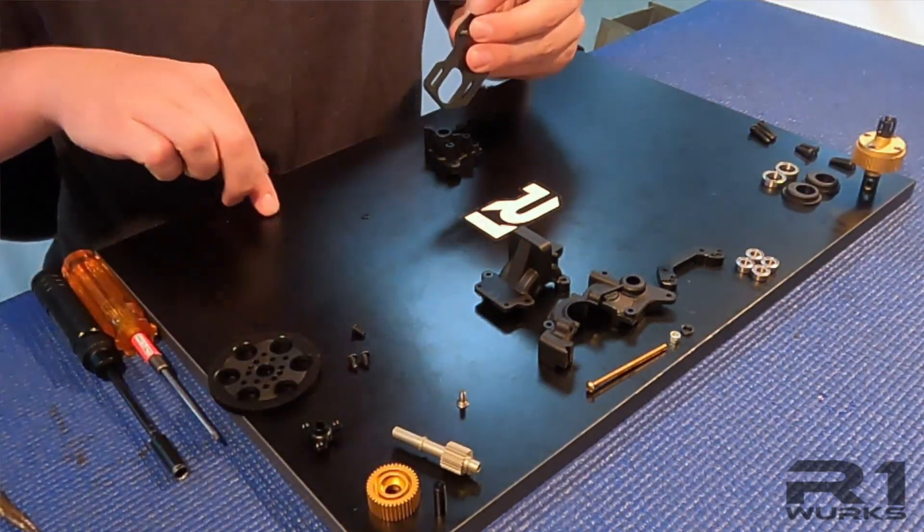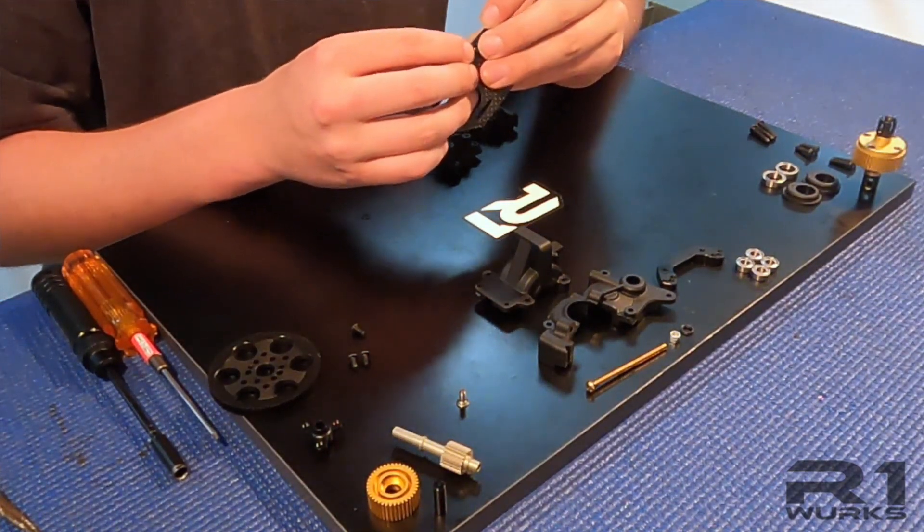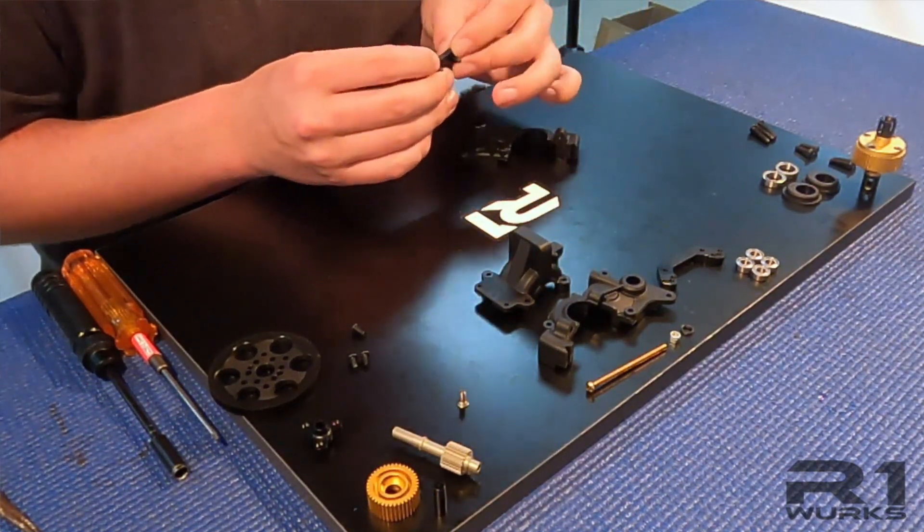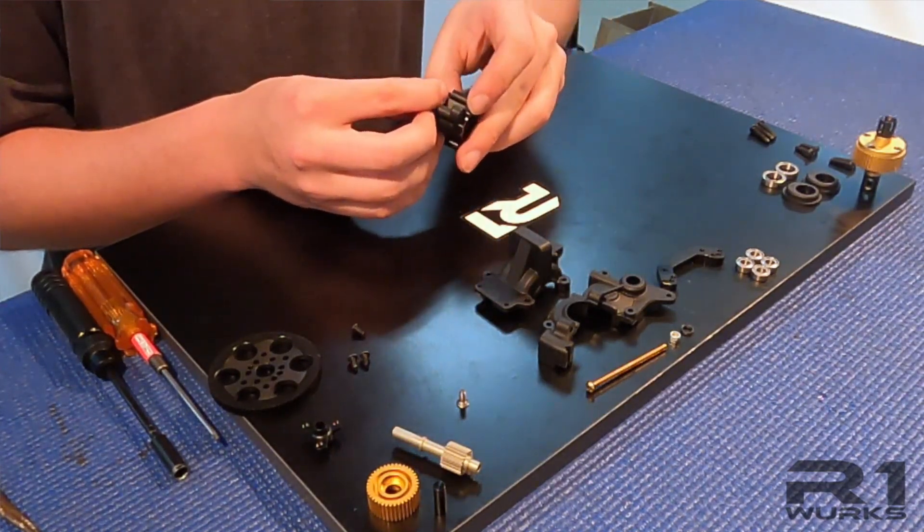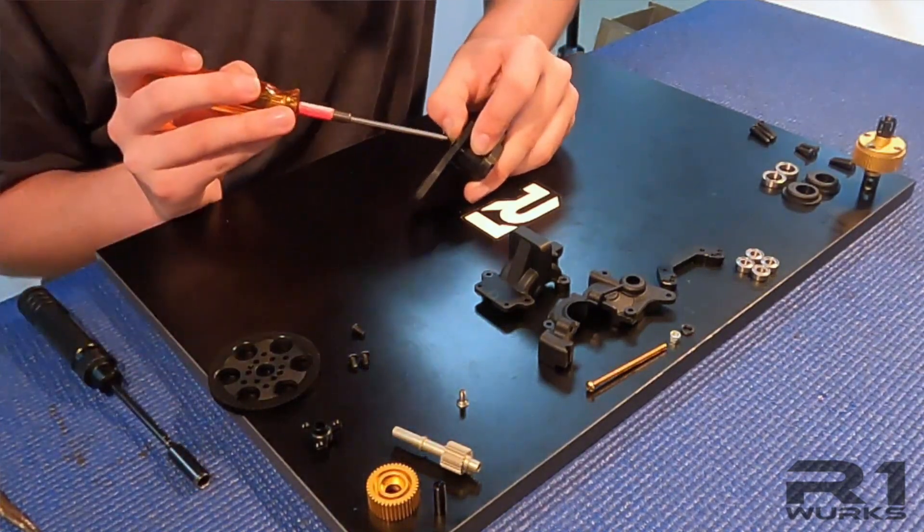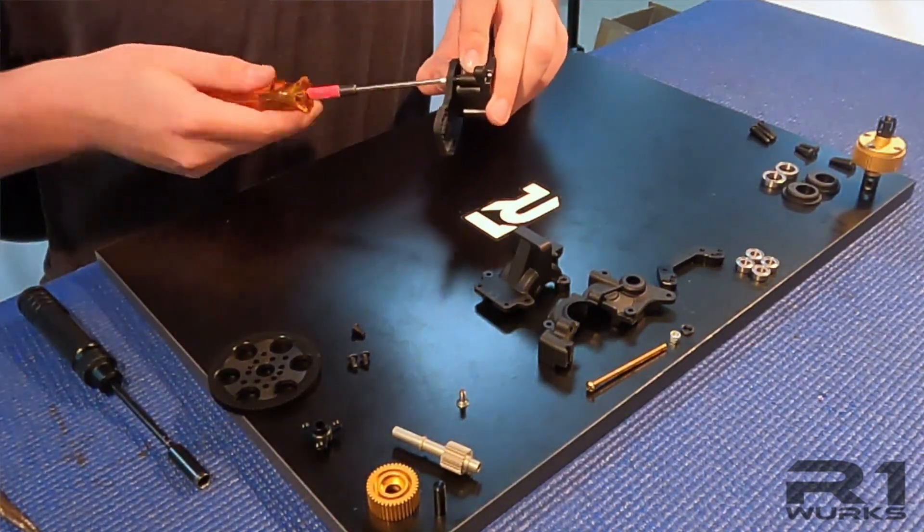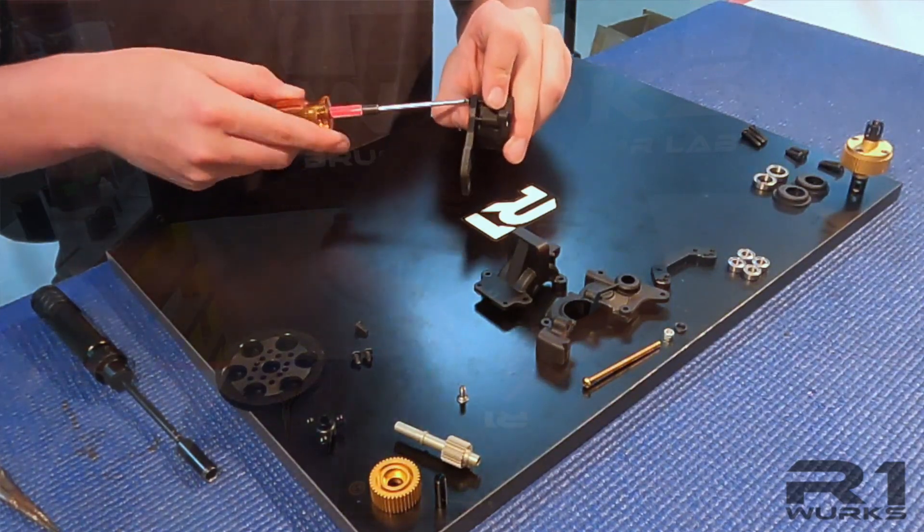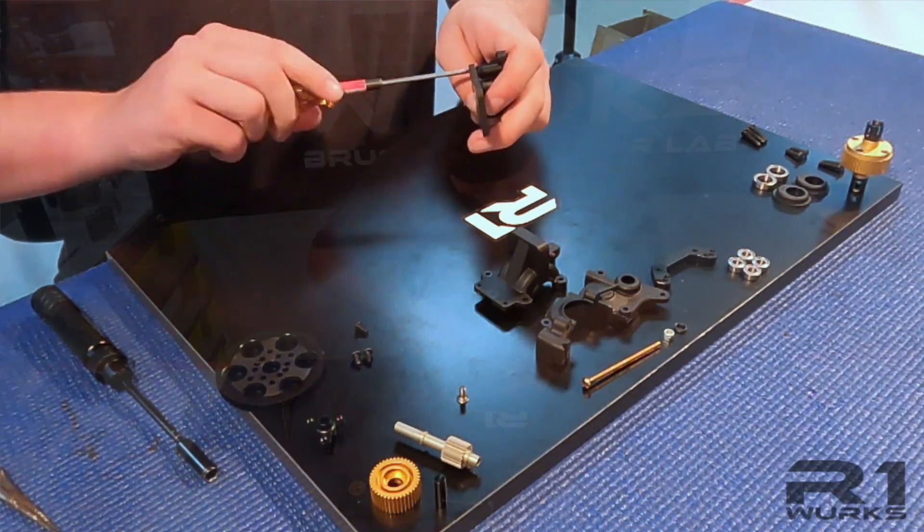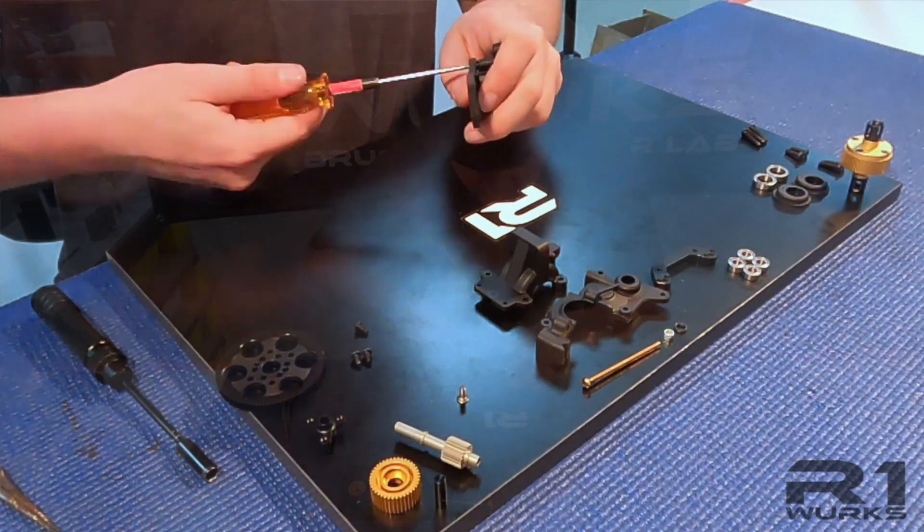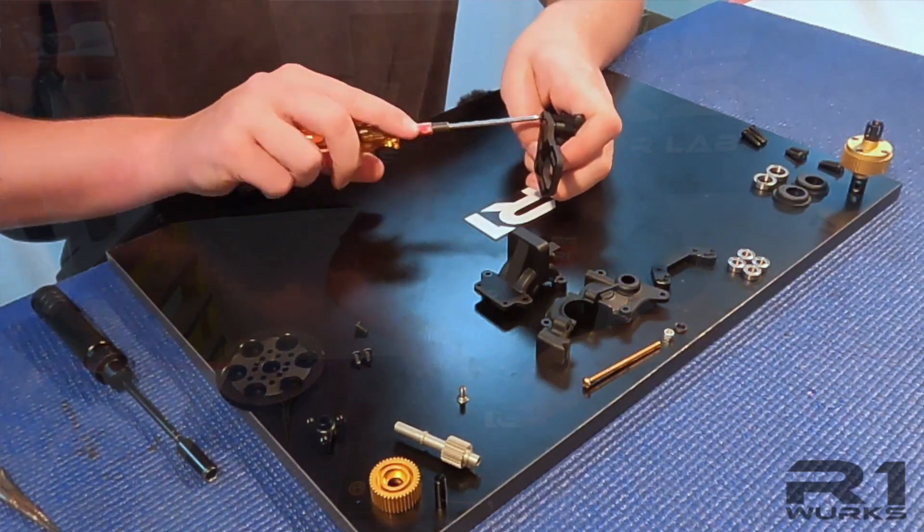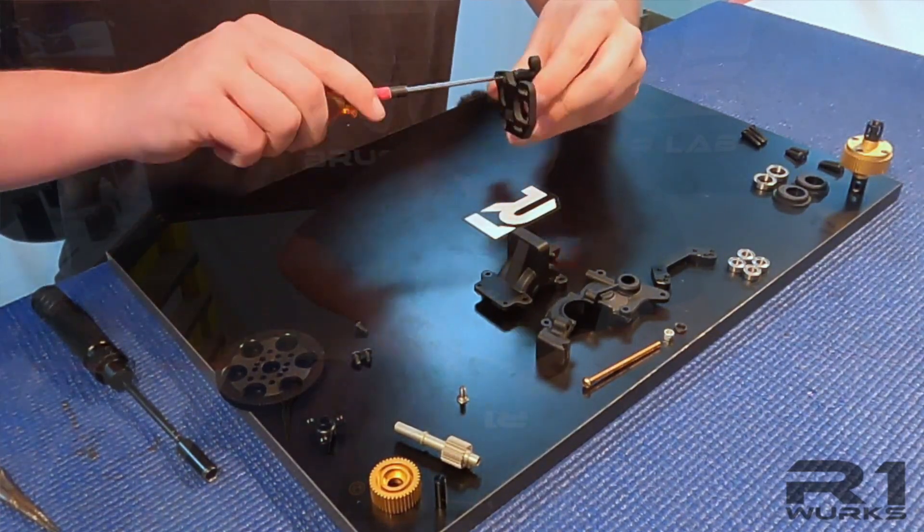So we will shim these pieces here. It's easiest to put it through like this first. Set this down on top. Feed the screws in. Tighten these up. Just like so.